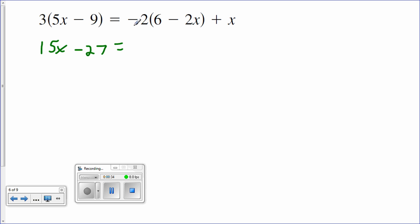Equals negative 2 times 6... that's negative 12, not 6x, 6. That's negative 12. Minus negative 2 times 2, that's minus negative 4, or plus 4x. And then we have this plus x hanging on at the end.